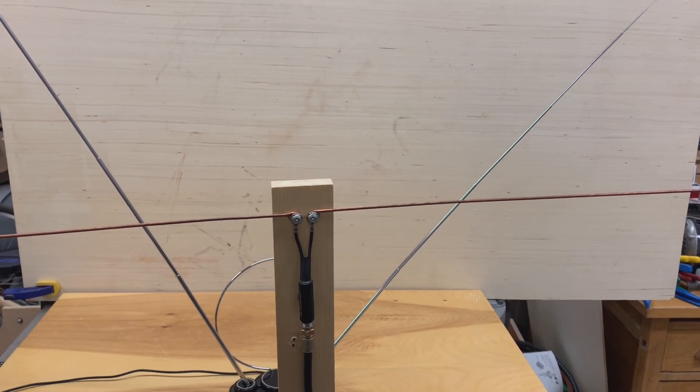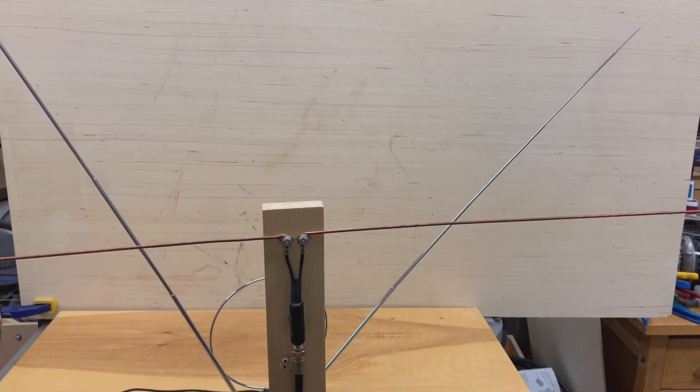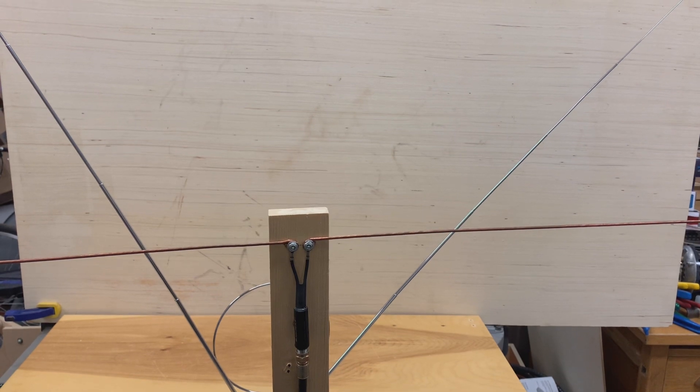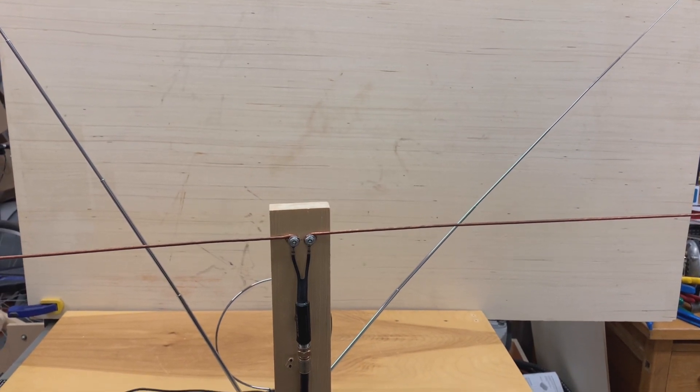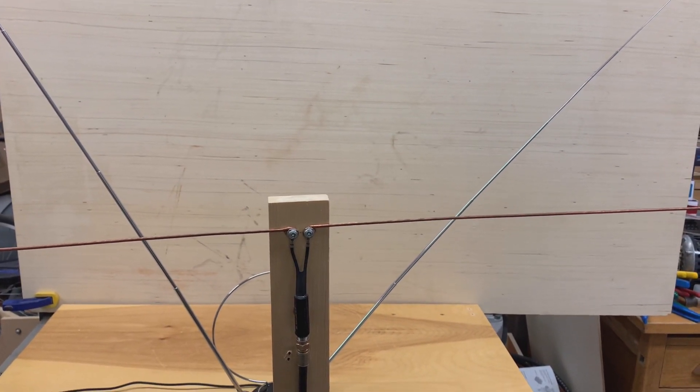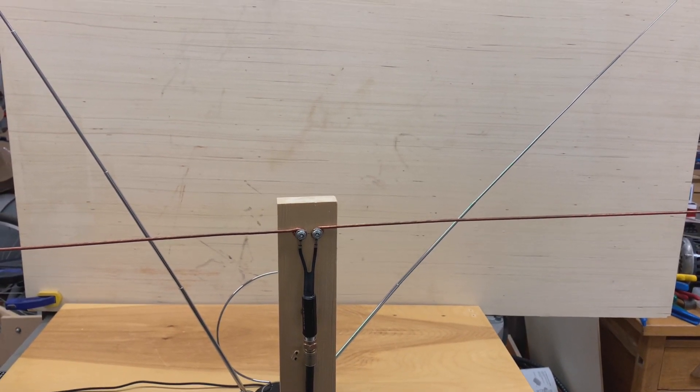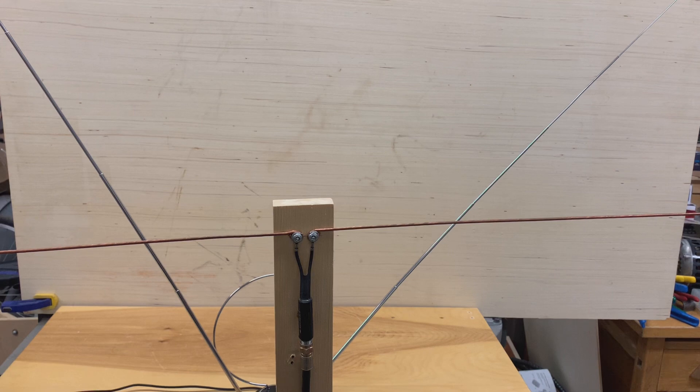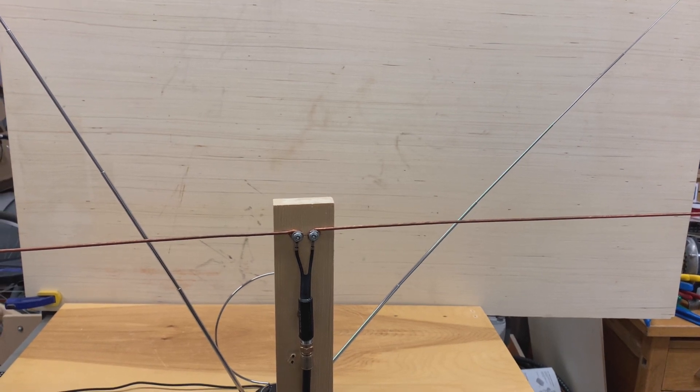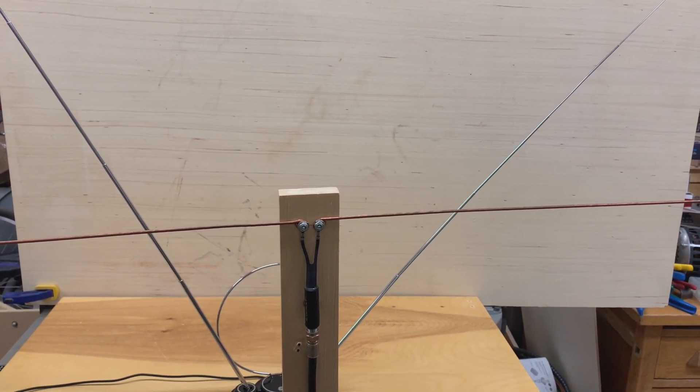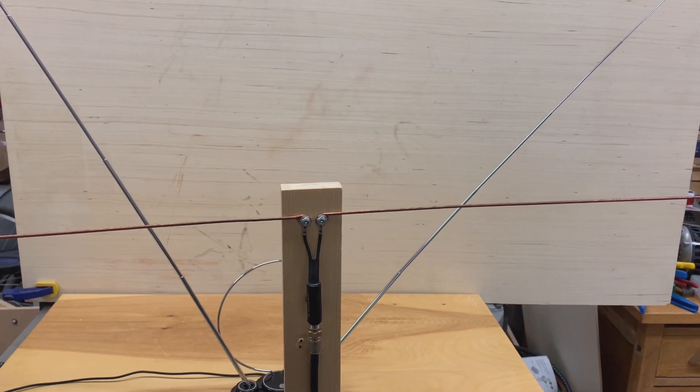In order to keep this experiment as honest as possible, I'm extending the elements on the rabbit ears to their maximum length. And I'm also going to position the antennas so that the tops of the elements are the same height off the ground, about 70 inches. And I'll be using the same length of coax cable to measure the reception of each antenna.